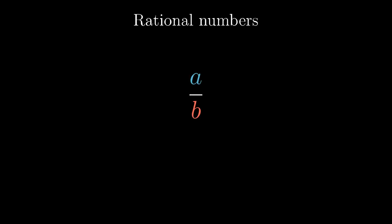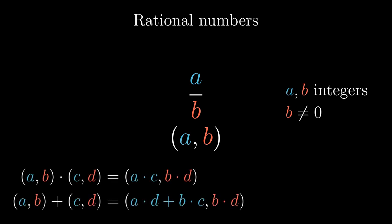We encode a general fraction A over B as the ordered pair (A,B) where A and B are integers and B is non-zero. When we want to define multiplication and addition, we can again use standard school formulas. We just have to deal with a little complication.